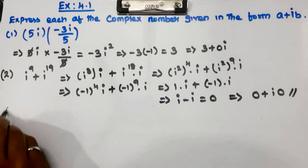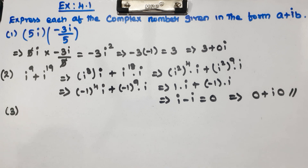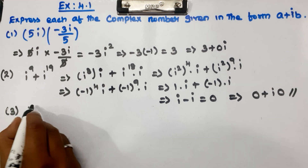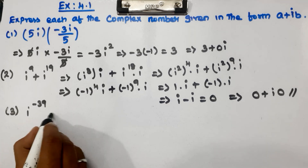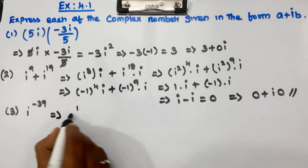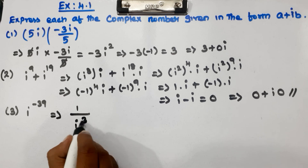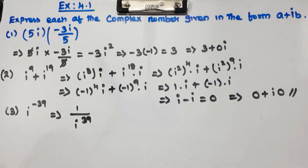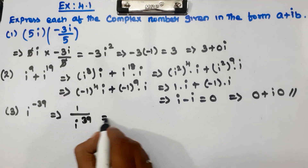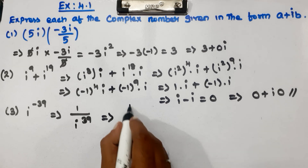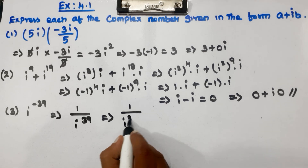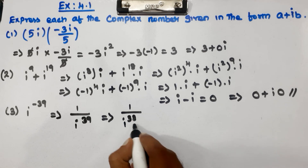Now let's look at question number 3. Question 3 is i to the power minus 39. Since it is an inverse, we write it as 1 over i to the power 39. If you add i to the power 39, separating to a square term gives you an even number — that's 1 by i to the power 38 into i.